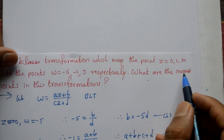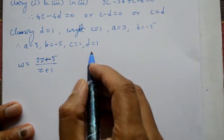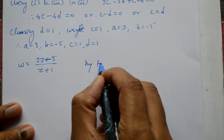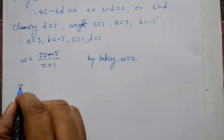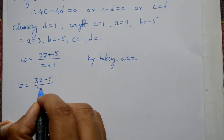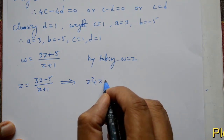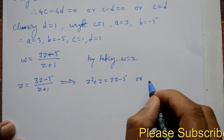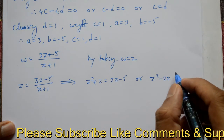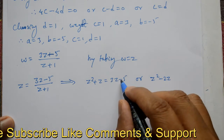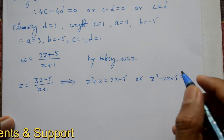What are the invariant points in this transformation? By taking ω = z: z = (3z - 5) / (z + 1). Cross multiply: z(z + 1) = 3z - 5, so z² + z = 3z - 5, therefore z² - 2z + 5 = 0. This is a quadratic equation, solve karenge using the quadratic formula.